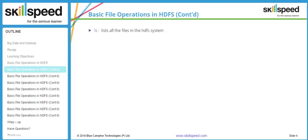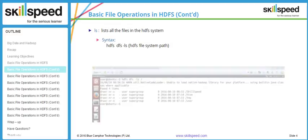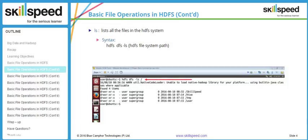The first command I want to introduce is the listing command. If you are familiar with the Linux file system, you might be aware of the famous ls command. The command to list the files on a Hadoop distributed file system is: hadoop dfs -ls. You can type either hadoop dfs -ls or hdfs dfs -ls. The difference is that hdfs dfs is the Hadoop 2 version command and hadoop dfs -ls is the Hadoop version 1 command.